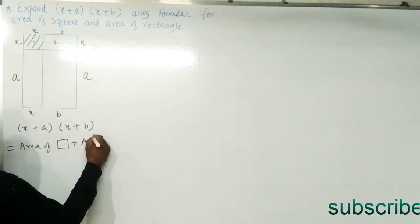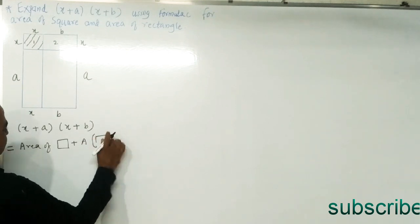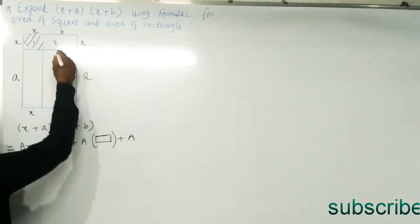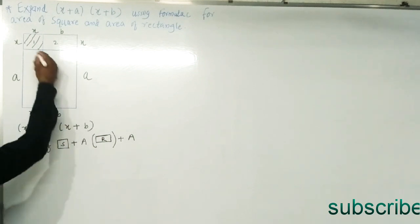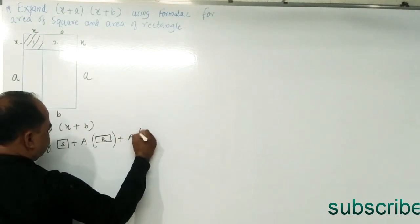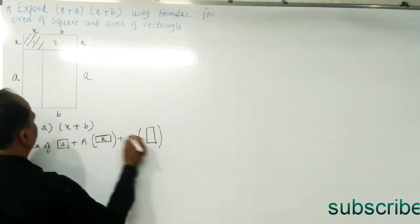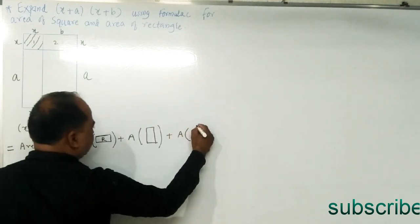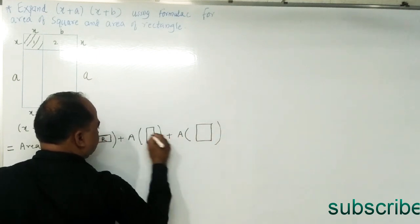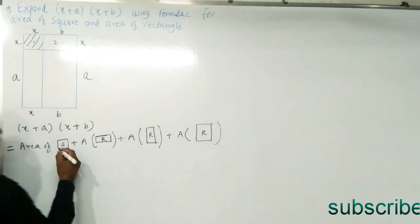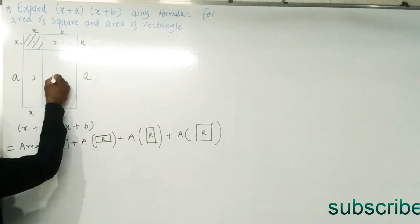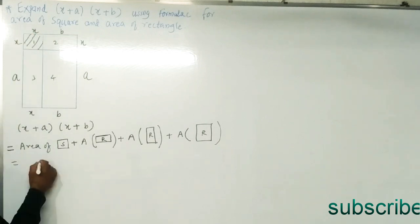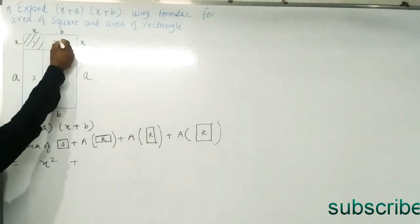The area of the square is the first part. Then we add the area of the first rectangle, the area of the second rectangle, and the area of the third rectangle. There are 3 rectangles in total. So the area of the square gives us x squared.